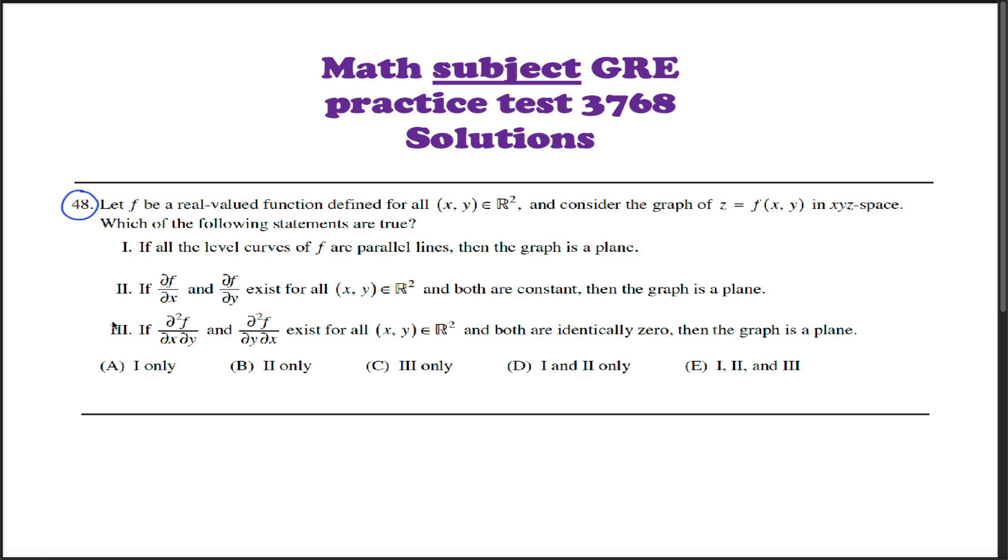In problem 48 we have another one of these questions where we're given three different statements and we're asked to evaluate the validity of each of the three. What's going on in this problem is we have this real valued function f defined everywhere in R², and what we're supposed to do is consider the graph of that function in three-dimensional space.